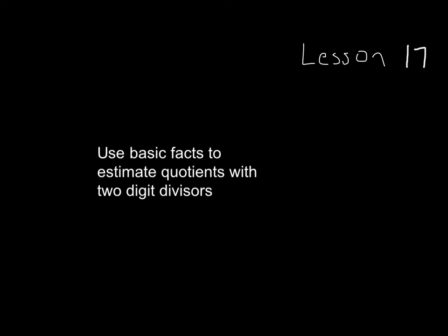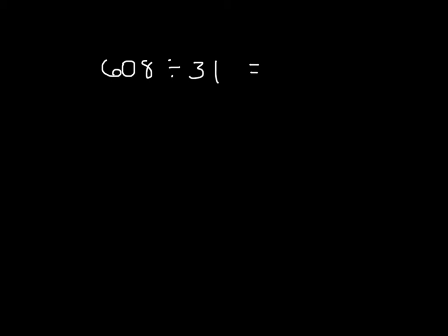Within this lesson, the objective is to use basic facts to estimate quotients with two-digit divisors. Within this problem, 608 is the dividend. We'll refer to it as the whole within this lesson. So what's the whole in this problem? That's W-H-O-L-E.